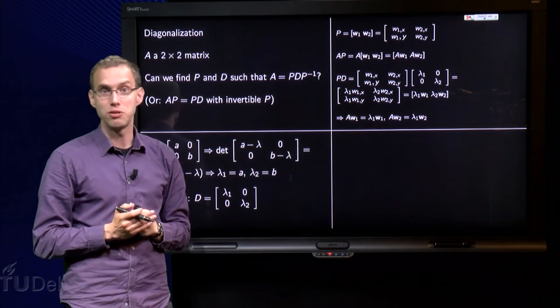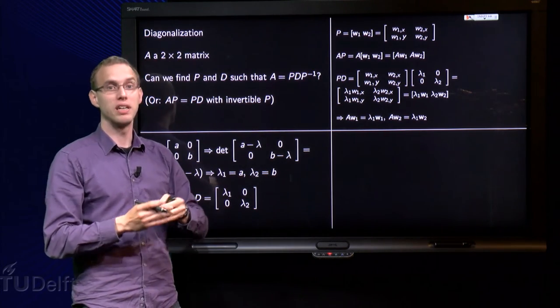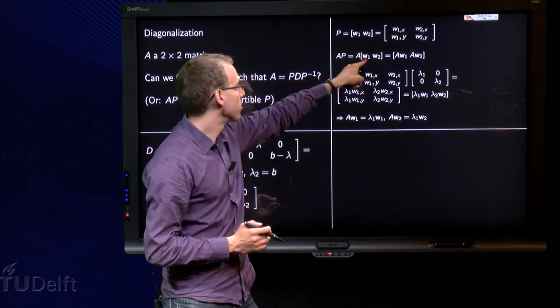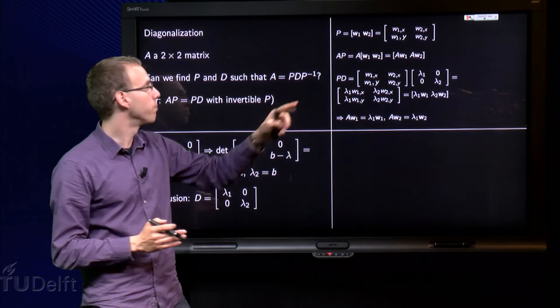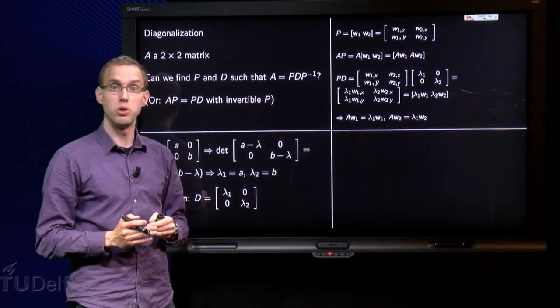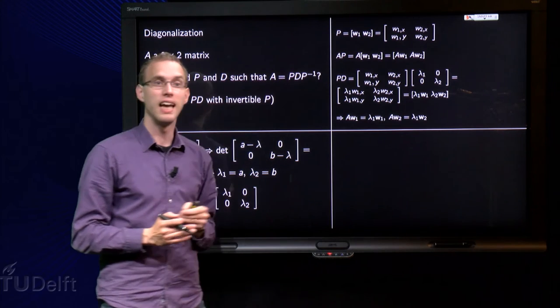Let me compute A times P. Well that is the easy one, we can use the definition of matrix times matrix. P consists of w₁ and w₂, so we get Aw₁ and Aw₂ as the columns of AP.